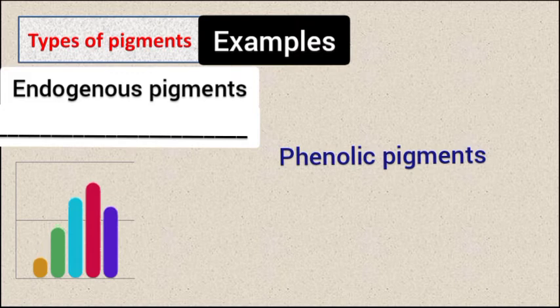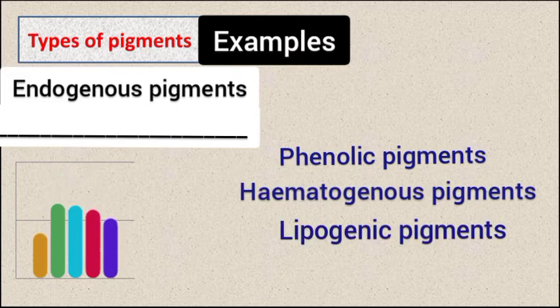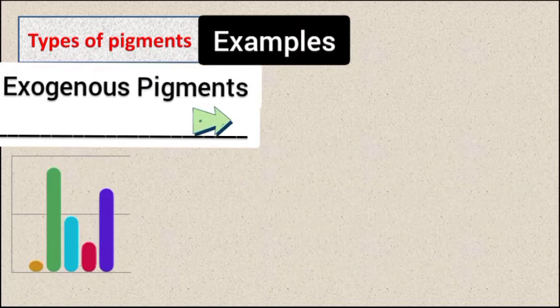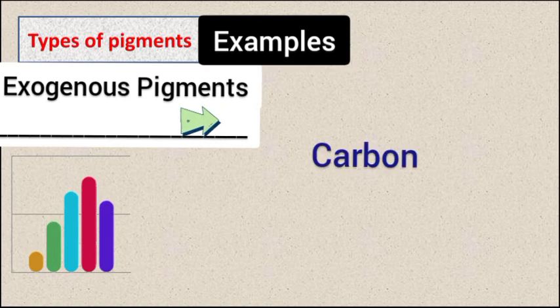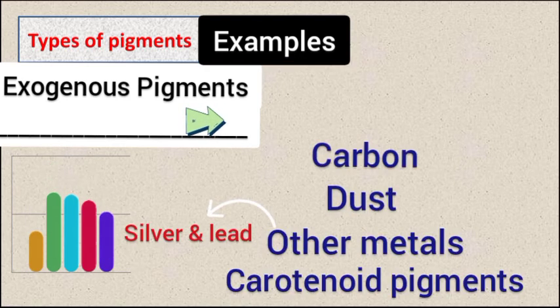Examples of endogenous pigments are phenolic pigments, hematogenous pigments, lipogenic pigments, and other pigments. Exogenous pigment examples include carbon dusts, other metals, and carotenoid pigments.